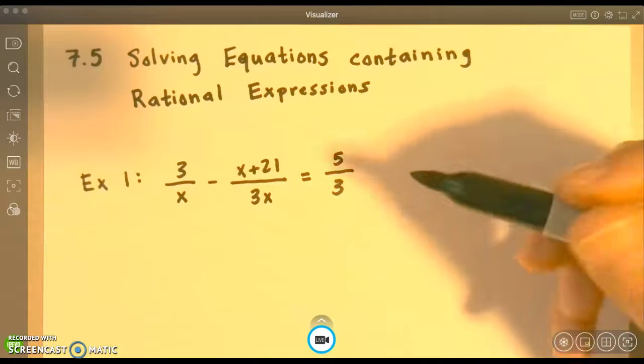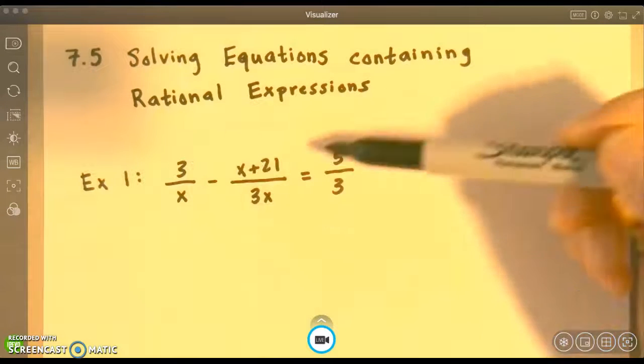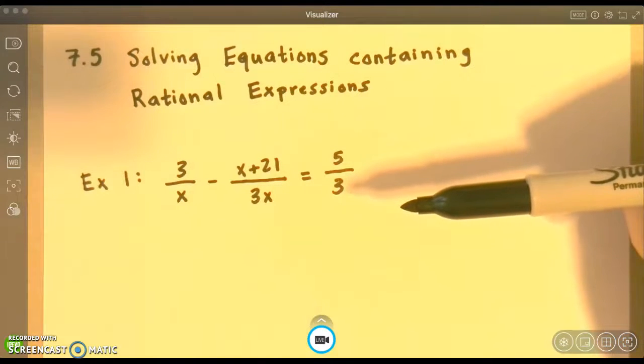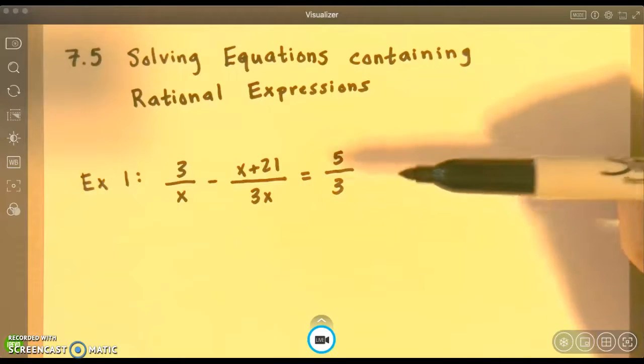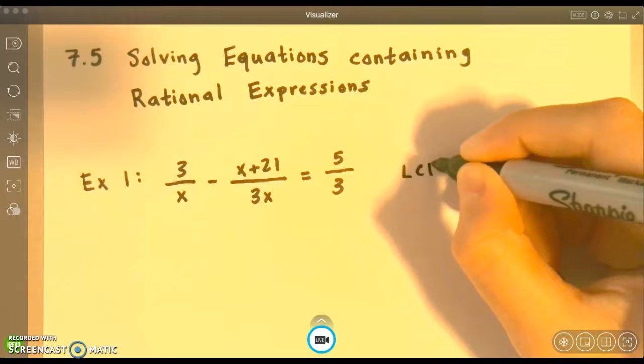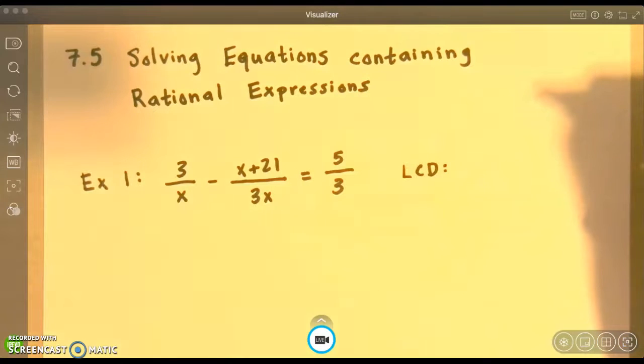The first thing we're going to do is get rid of all the fractions. That's why this is a rational expression, because there are fractions. To get rid of all the fractions, we want to figure out what the LCD is, because then we're going to multiply every single term by that LCD and clear the fractions.